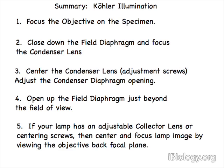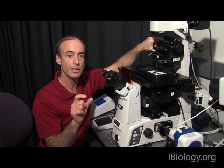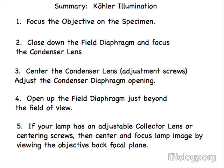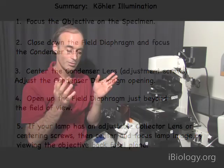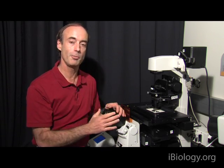In summary, let's go through the steps again. First, we put the sample in place, adjusted the light intensity, and focused on the specimen. Next, we closed down the field diaphragm and adjusted the position of the condenser lens, looking through the eyepiece until we see the iris of the field diaphragm clearly in focus on the specimen plane. The third step is to open up the field diaphragm just past the field of view. Finally, we adjusted the condenser aperture. The key thing now is not just to watch the lecture, but to go find a microscope yourself and go through all of these steps in Köhler illumination and practice them so it becomes second nature.